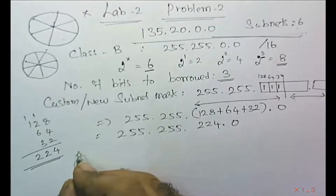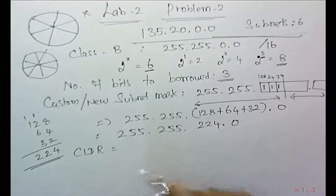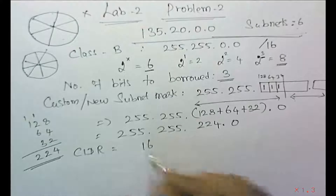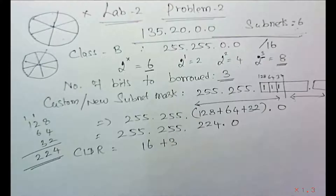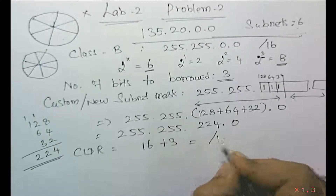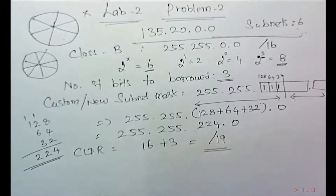The custom CIDR value: Class B already had 16 bits, and we are borrowing 3 more bits, so the new CIDR value is /19. That is the new CIDR value and those are the basic concepts.